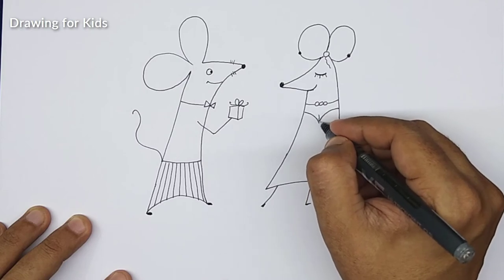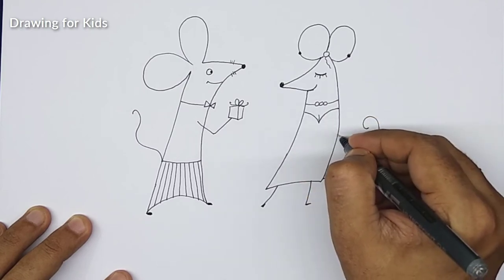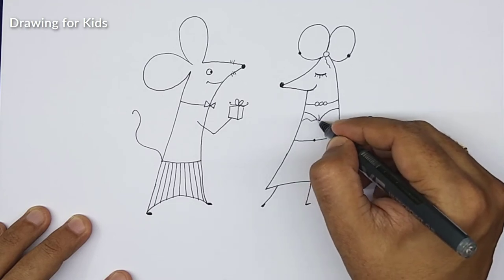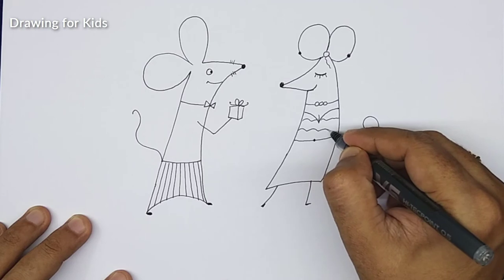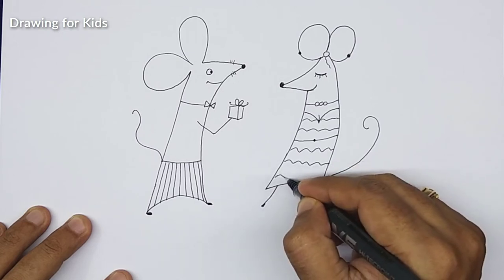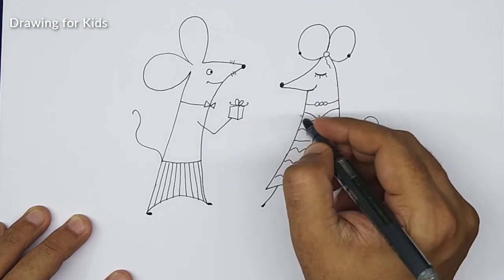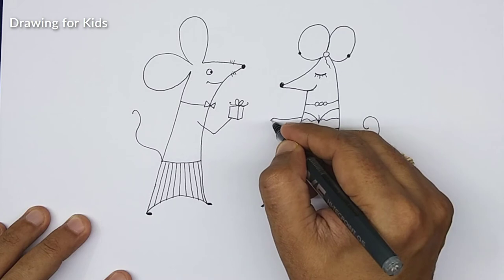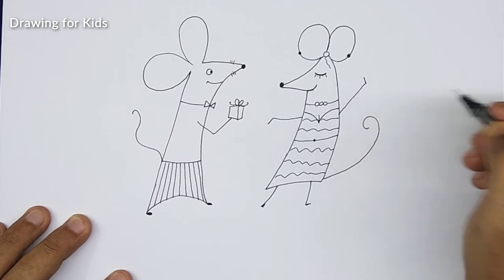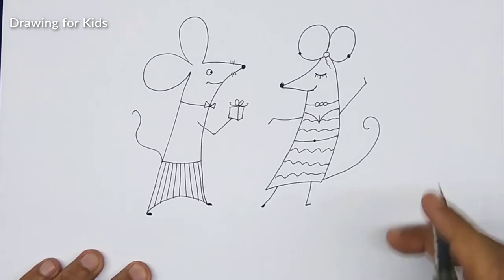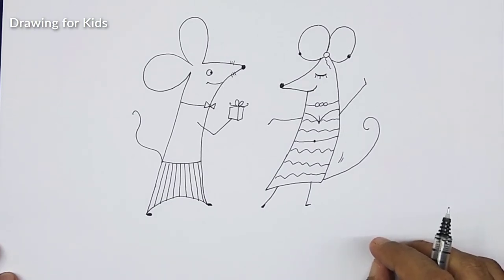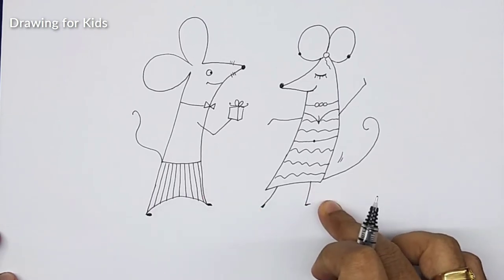The dress she is wearing. Her hands. One, like this, another one. She is super happy, so she is dancing. This is our mouse giving a gift to a girl, and let's color them.